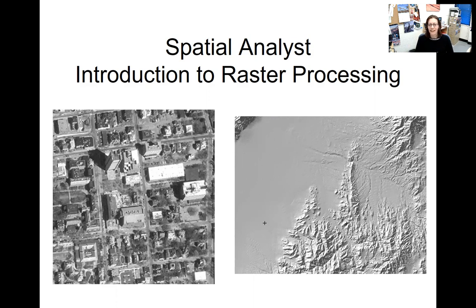Raster data are completely different in many ways from vector data. We can still do similar geoprocessing steps — looking for overlap, intersection or clip where two pixels overlap. We can also effectively do an erase, like excluding areas of one raster feature, like an elevation band that's too high for a species to exist. But instead of geoprocessing tools like intersects, erases, or buffers, we use different approaches.